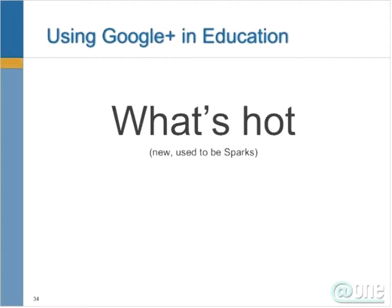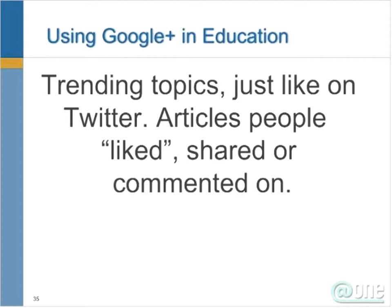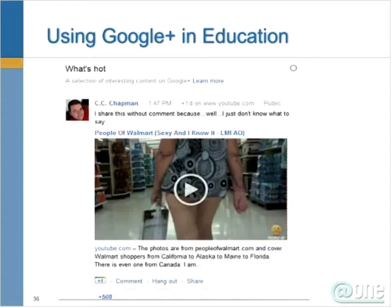The third feature is What's Hot. It used to be called Spark, but Google renamed it. What's Hot shows trending topics — similar to Twitter — including articles people liked, shared, or commented on. On Twitter you use hashtags like #politics or #SuperTuesday to find what people are discussing. On Google Plus, it works similarly: if a post generates a lot of engagement, it surfaces in What's Hot.